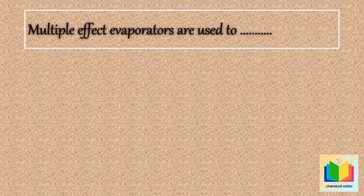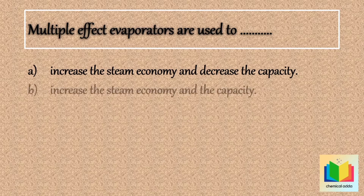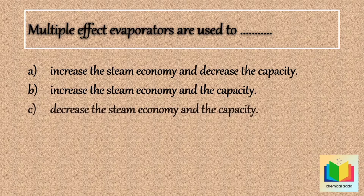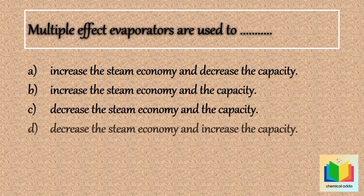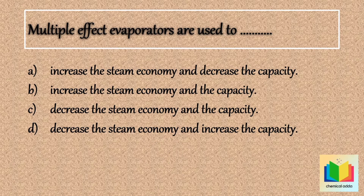Multiple effect evaporators are used to: options are option A, increase the steam economy and decrease the capacity; option B, increase the economy and the capacity; option C, decrease the steam economy and the capacity; option D, decrease the steam economy. So answer is option B, increase the economy and the capacity.